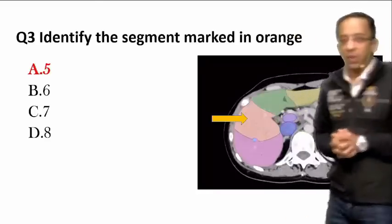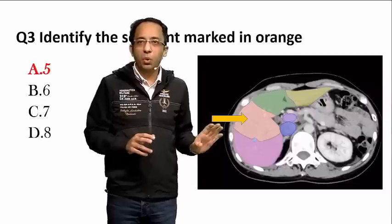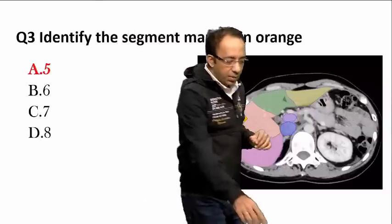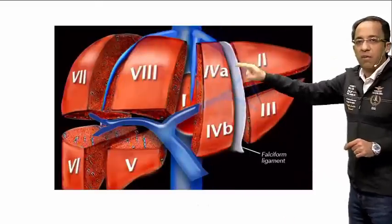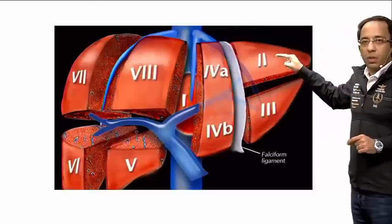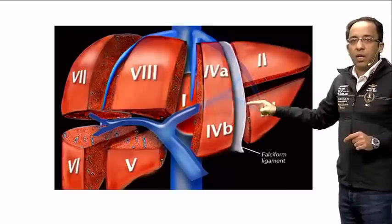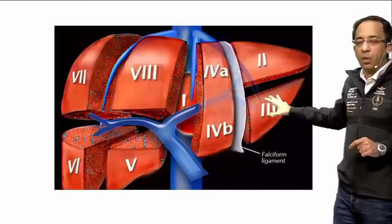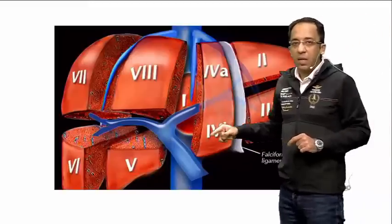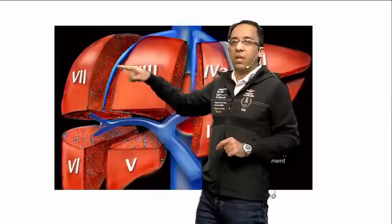Next, they asked a unique question: a CT of the liver with identification of the segment marked in orange. In the liver, segments are divided on the basis of hepatic veins and portal veins. On the left lobe: segment 1 is the caudate lobe; the superior segment is segment 2, inferiorly is 3, superiorly 4a, inferiorly 4b. So 2, 3, 4a, 4b are segments of the left lobe. In the right side: right anterior is 5, right posterior is 6, then 7 and 8.